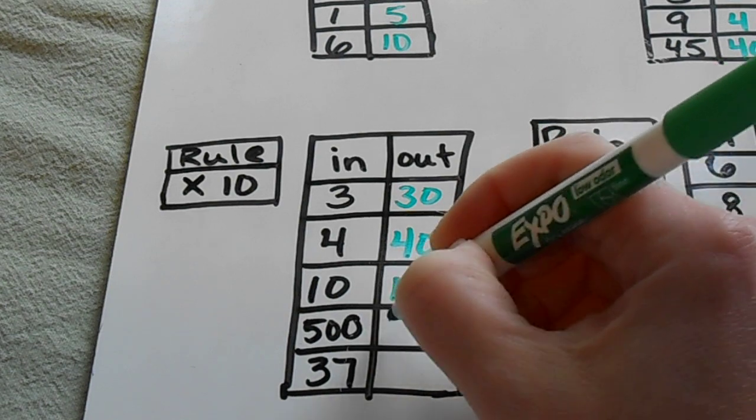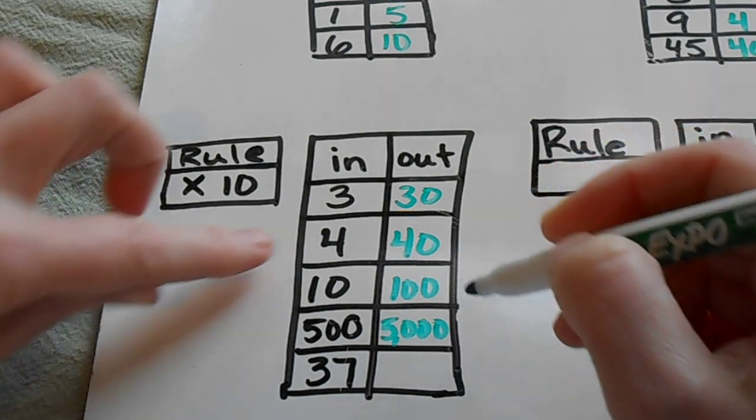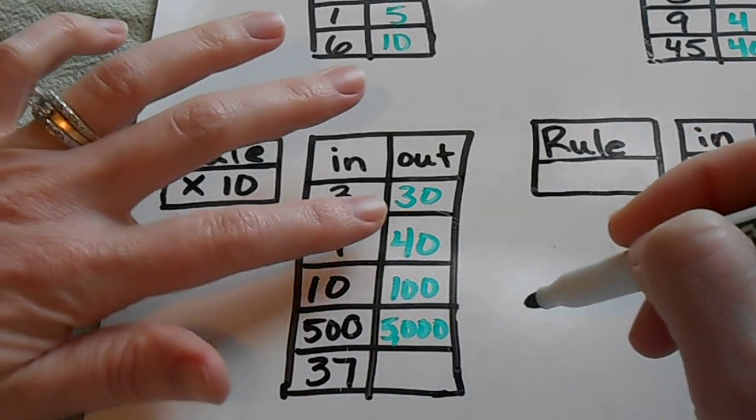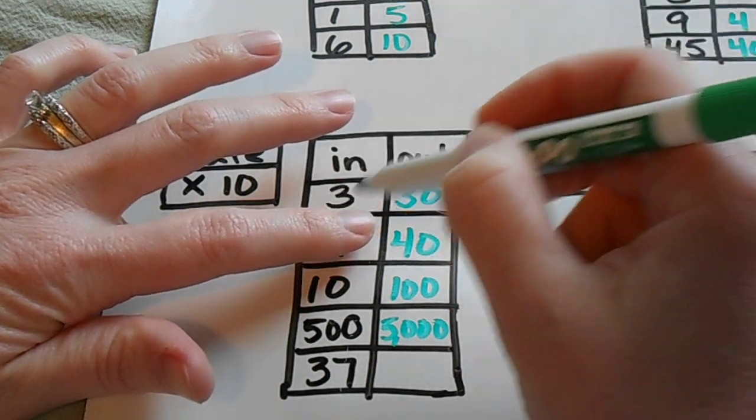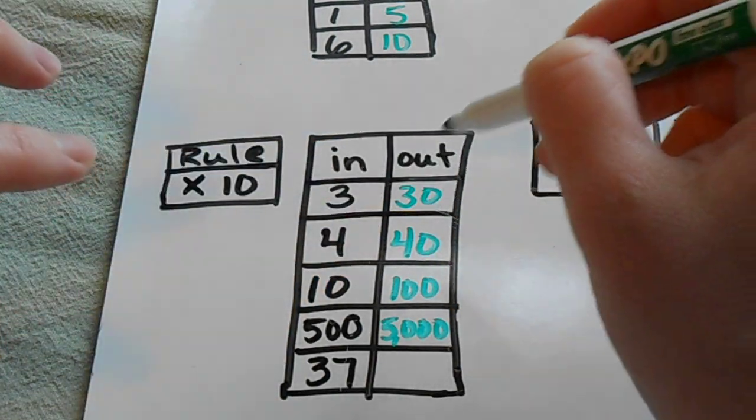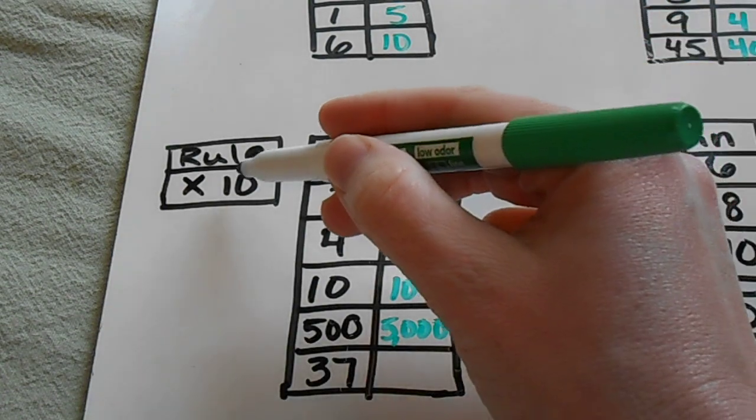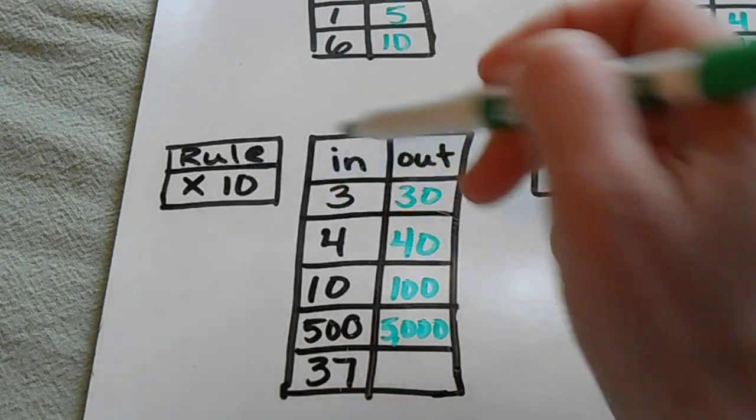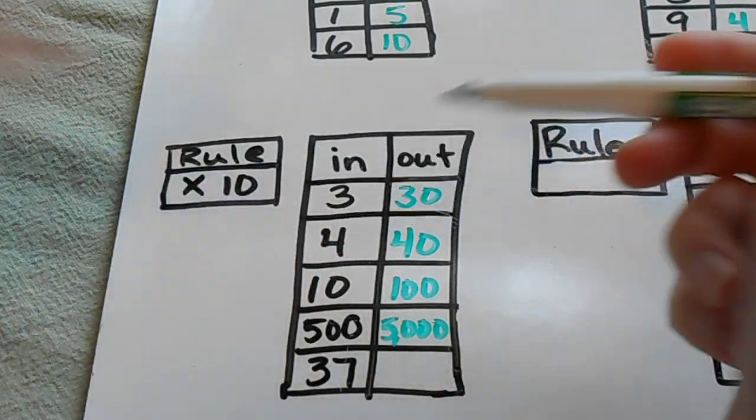Sometimes you might see in and out boxes that have different parts missing, like one of the in boxes is missing and the 40 will be written here. And you have to figure out what would have to go in in order to get 40 in the out position. So in that case, you would just actually do the opposite operation. So if we have 40 here, we would actually divide by 10 to get 4.